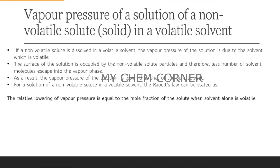For a solution of a non-volatile solute in a volatile solvent, Raoult's Law is stated in terms of relative lowering of vapor pressure. It is called 'relative lowering' because the vapor pressure is lower compared to the pure solvent. The relative lowering of vapor pressure equals the mole fraction of the solute, since only the solvent is volatile.